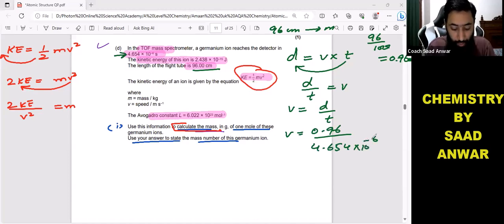So distance 0.96, time is given here: 4.654 times 10 to the power minus 6. 0.96 divided by 4.654 times 10 to the minus 6, the answer you will be getting is 206,274.1728 per second. This is the velocity.